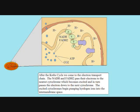Because NADH and FADH2 are highly reduced, they easily pass their electrons to the cytochromes. The cytochromes become excited and pass the electron down the chain of cytochromes until they all have become excited. Once the cytochromes become excited, they begin pumping hydrogen ions, or protons, into the intermembrane space.